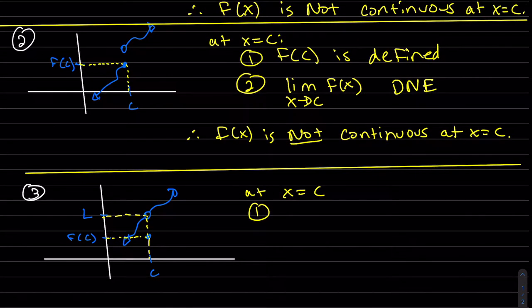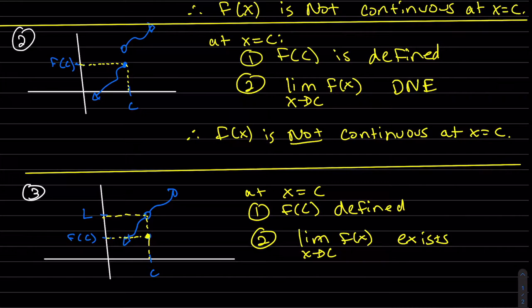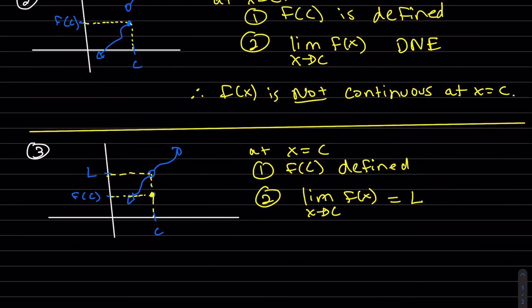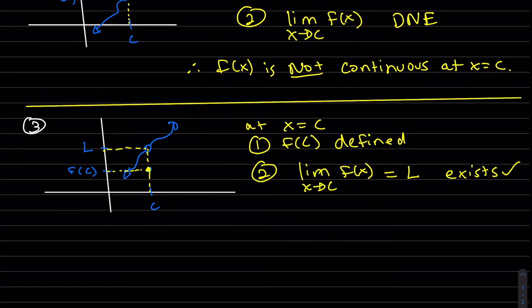Here again, f of c is defined, and we can see the limit exists at c — the left limit does equal the right limit, so that limit exists. But the problem is that the limit does not equal f of c, the defined value. So it's a jump.